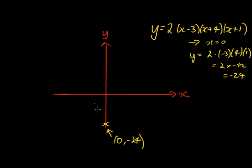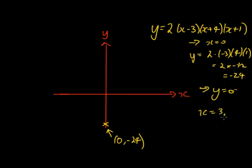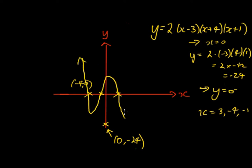If you're graphing this, you'll want a larger scale since the y-intercept is at −24 while the x-intercepts are closer together. Keep the scale consistent along each axis. Now find the x-intercepts by setting y = 0. This gives x = 3, x = −4, and x = −1. So the graph passes through (−4, 0), (−1, 0), and (3, 0).